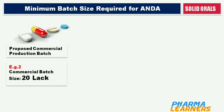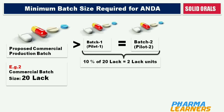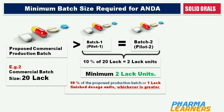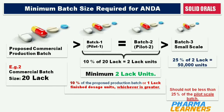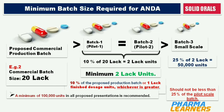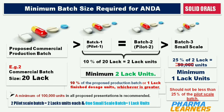Let's take one more example. If the proposed commercial batch size is 20 lakhs, then 10% of 20 lakhs is 2 lakh units. Here 2 lakh is greater than 1 lakh, so the minimum quantity of the 2 pilot batches is 2 lakh units each. Now for the 3rd batch: 25% of 2 lakh is 50,000. But again, as per guidelines, the minimum quantity is 1 lakh units for all 3 batches. So the 3rd batch will be 1 lakh units instead of 50,000. In short, 2 pilot scale batches will be 2 lakh units each and the 3rd small scale batch will be 1 lakh units in this case.